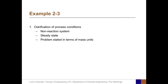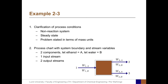First, we clarify the process conditions. This is a non-reaction system. It is a steady-state system, and the problem is stated in terms of mass units. We now draw the process chart with system boundaries and stream variables. We have two components — ethanol is A and water is B — with one input stream and two output streams.